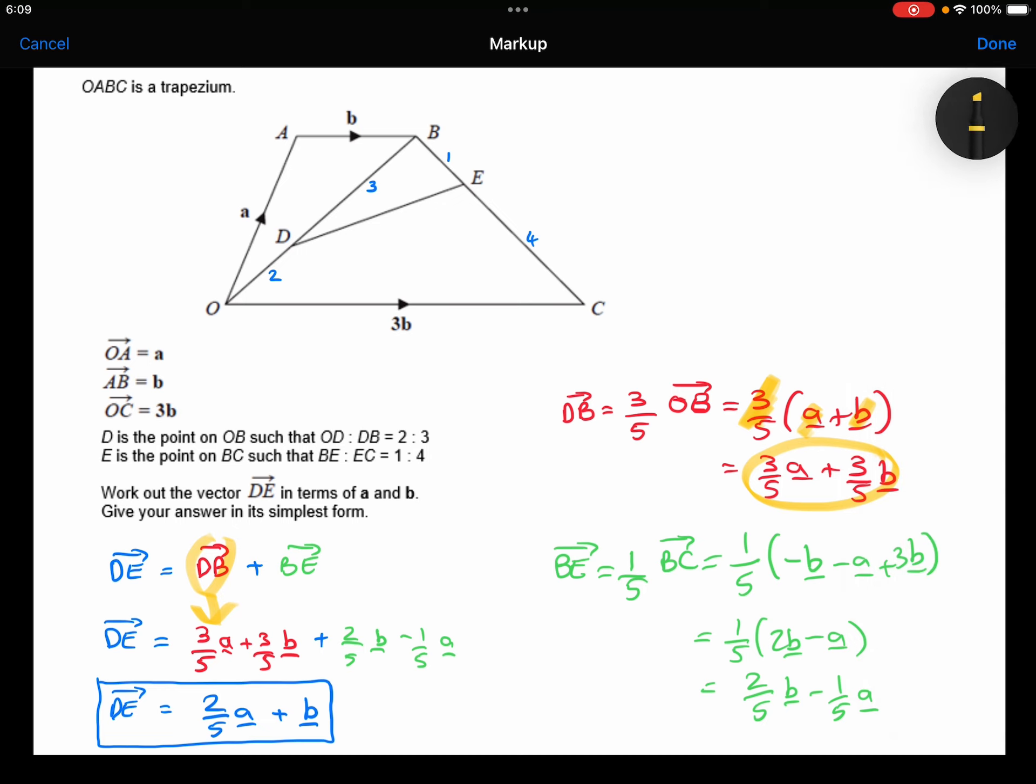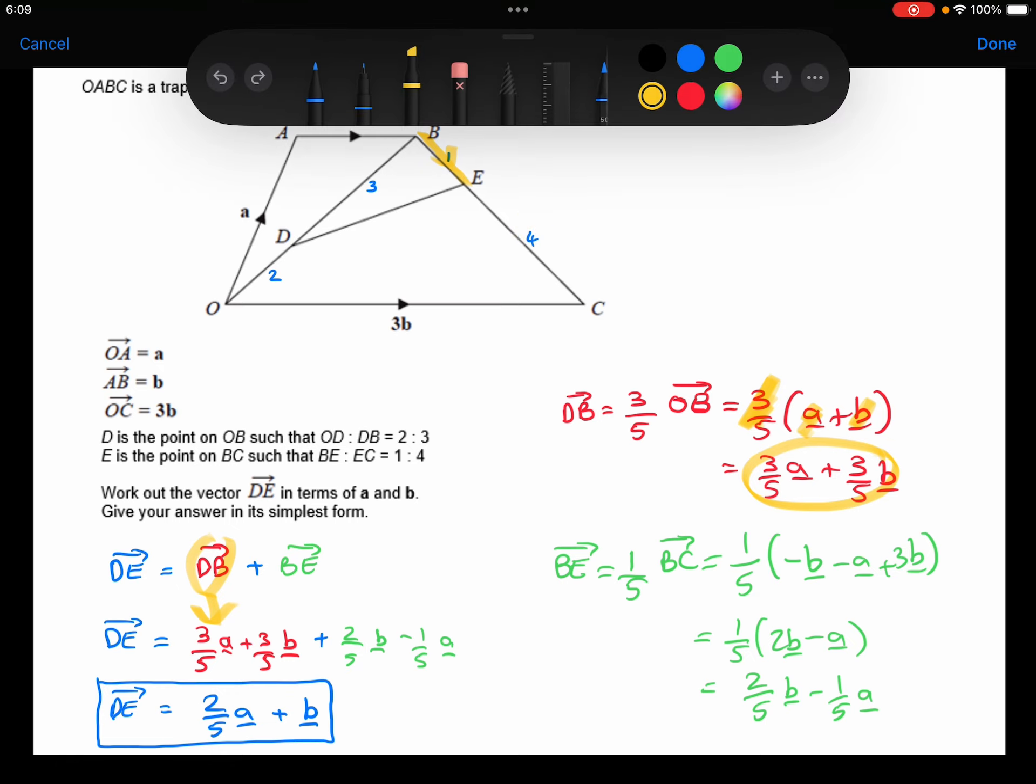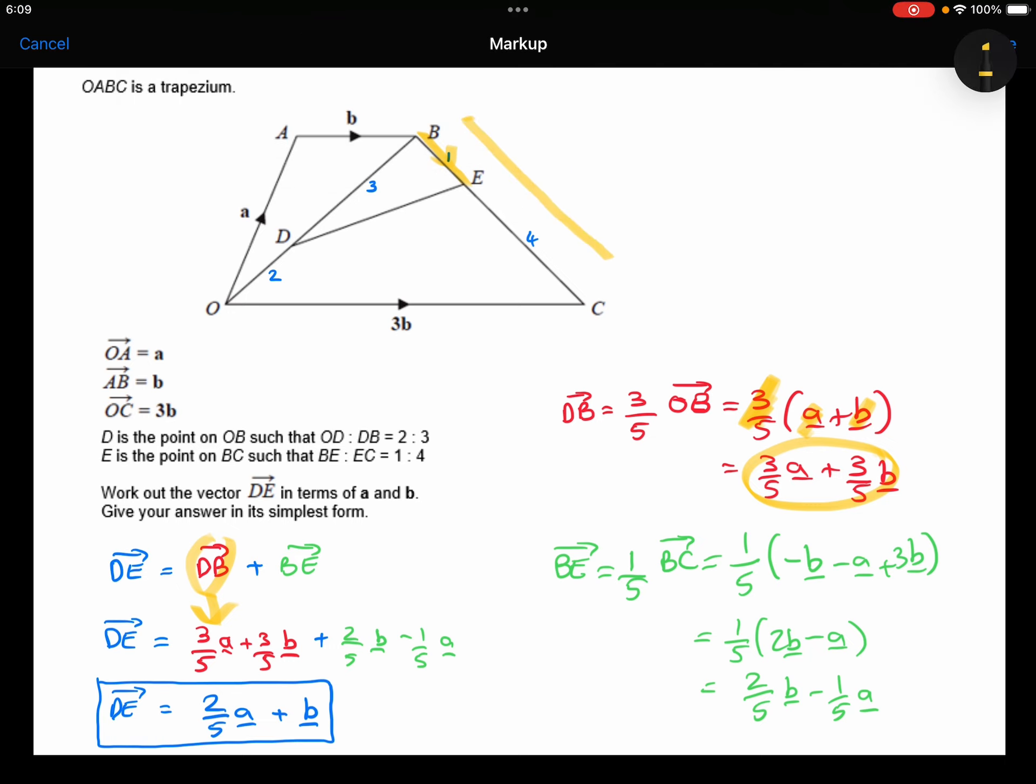Next, the B to E. BE, this is 1 fifth, because that's 1 part and this is 4 parts. So that's 1 fifth of the whole of BC. The whole of BC, I can think of that as being the same as minus b minus a plus 3b, which simplifies to be 2b minus a.